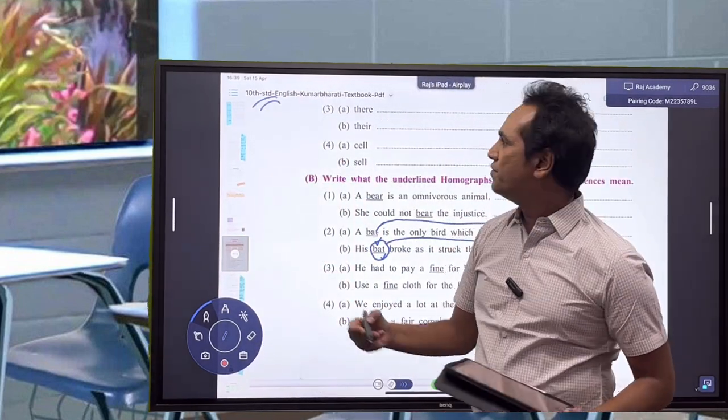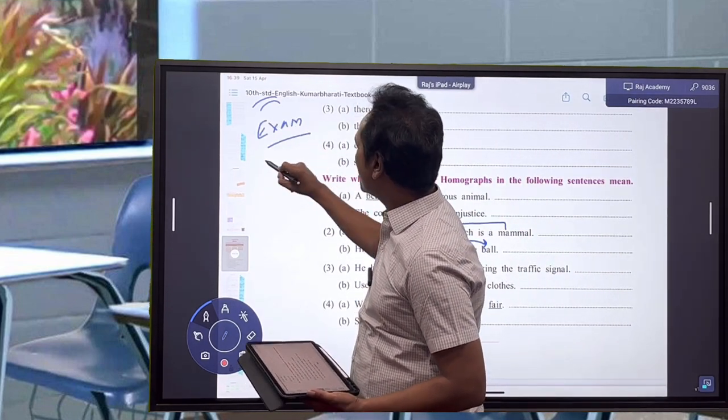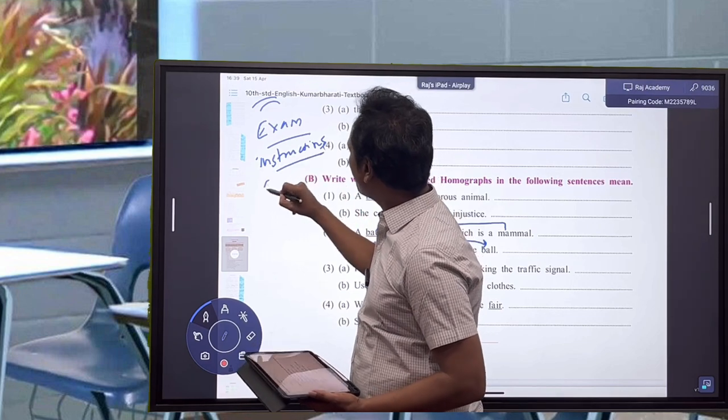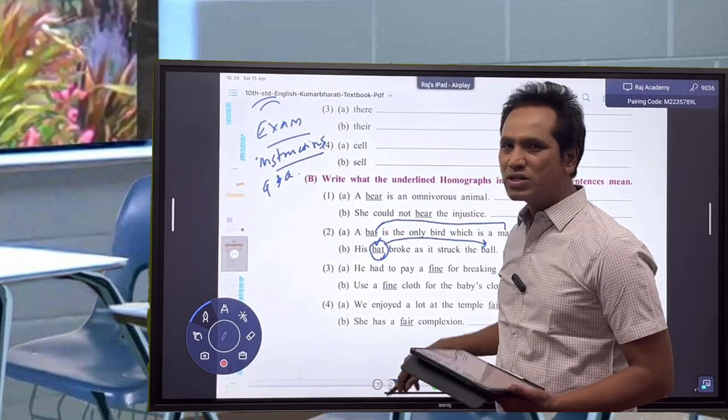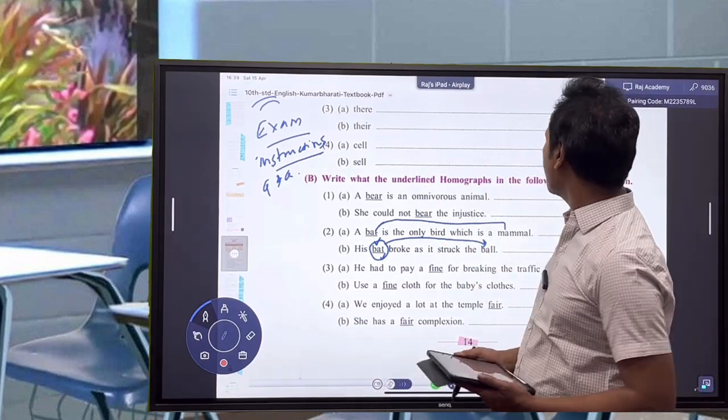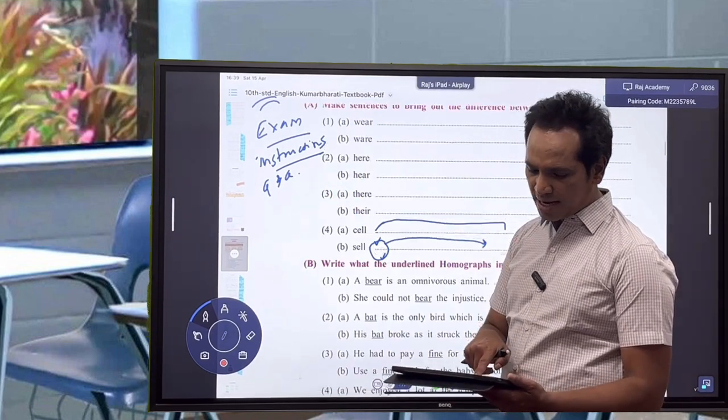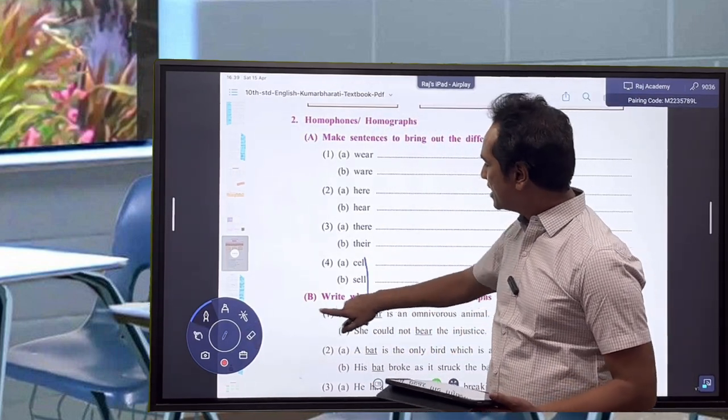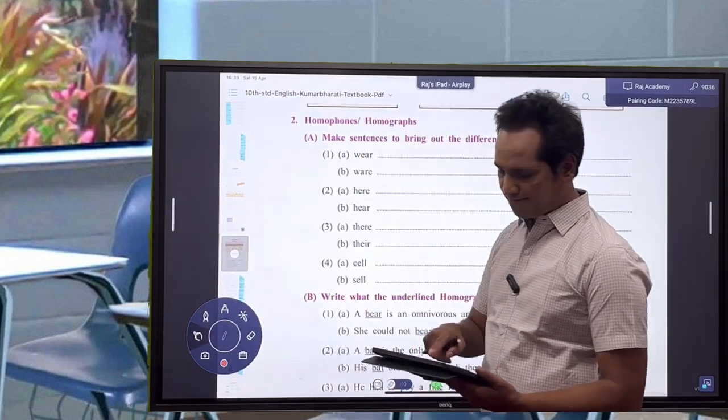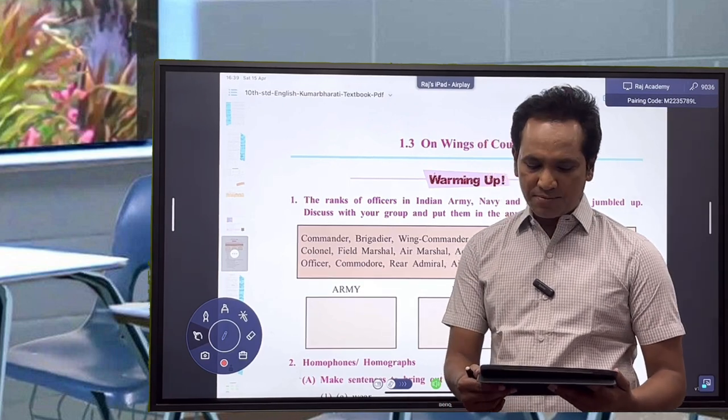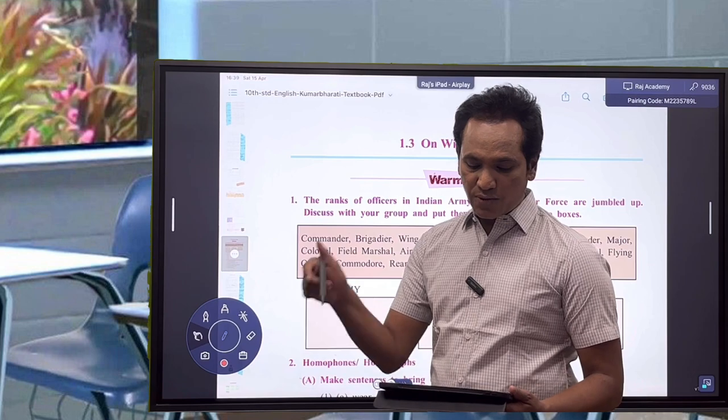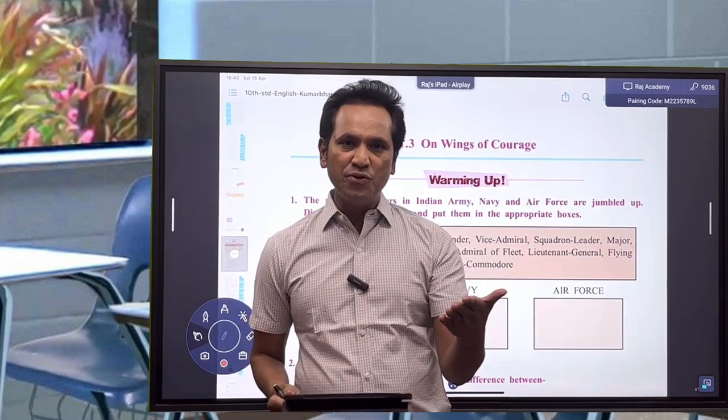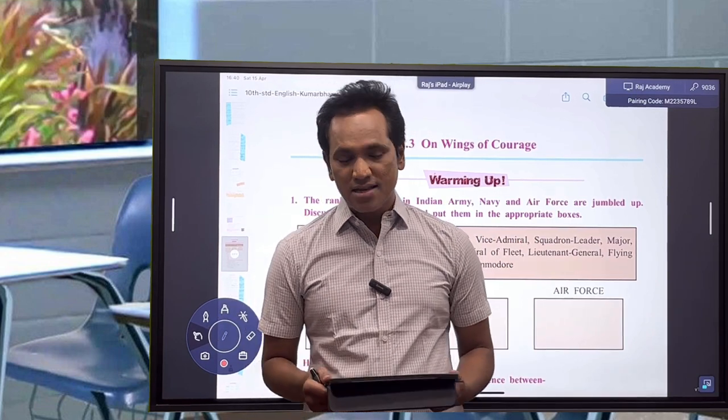In examinations, the most important thing is instructions. Or we can say instructions, or we can say questions and answers. So when these instructions are given to you—write what the underlined homographs in the following sentences mean, or make sentences to bring out the difference between—you see certain things. The ranks of officers in Indian Army, Navy, and Air Force are jumbled up. Discuss with your group and put them in the appropriate boxes. So very few things are there. If you can do this, you can better learn things.